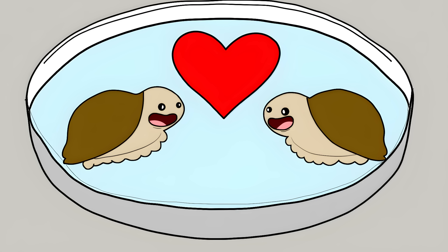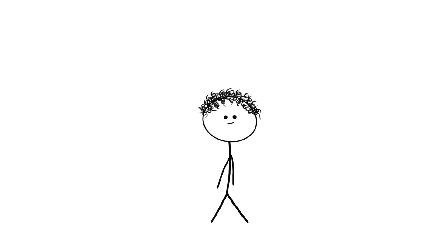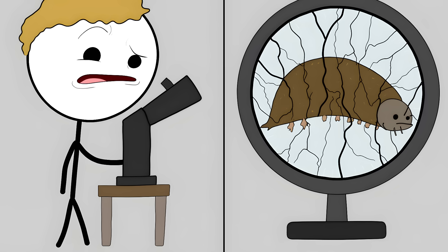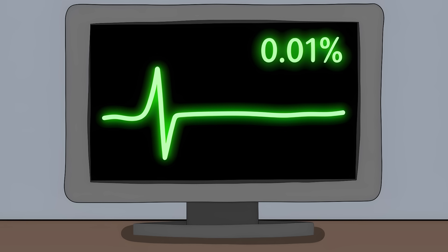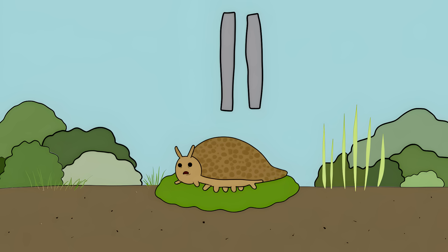Here's how they do it. When things get rough, tardigrades curl up into a ball called a tun and push out 95 percent of their water. Then they replace it with special proteins that turn their insides into biological glass. Their metabolism drops to 0.01 percent of normal. They're not dead, they're not alive, they're just paused. They can stay like this for possibly centuries.